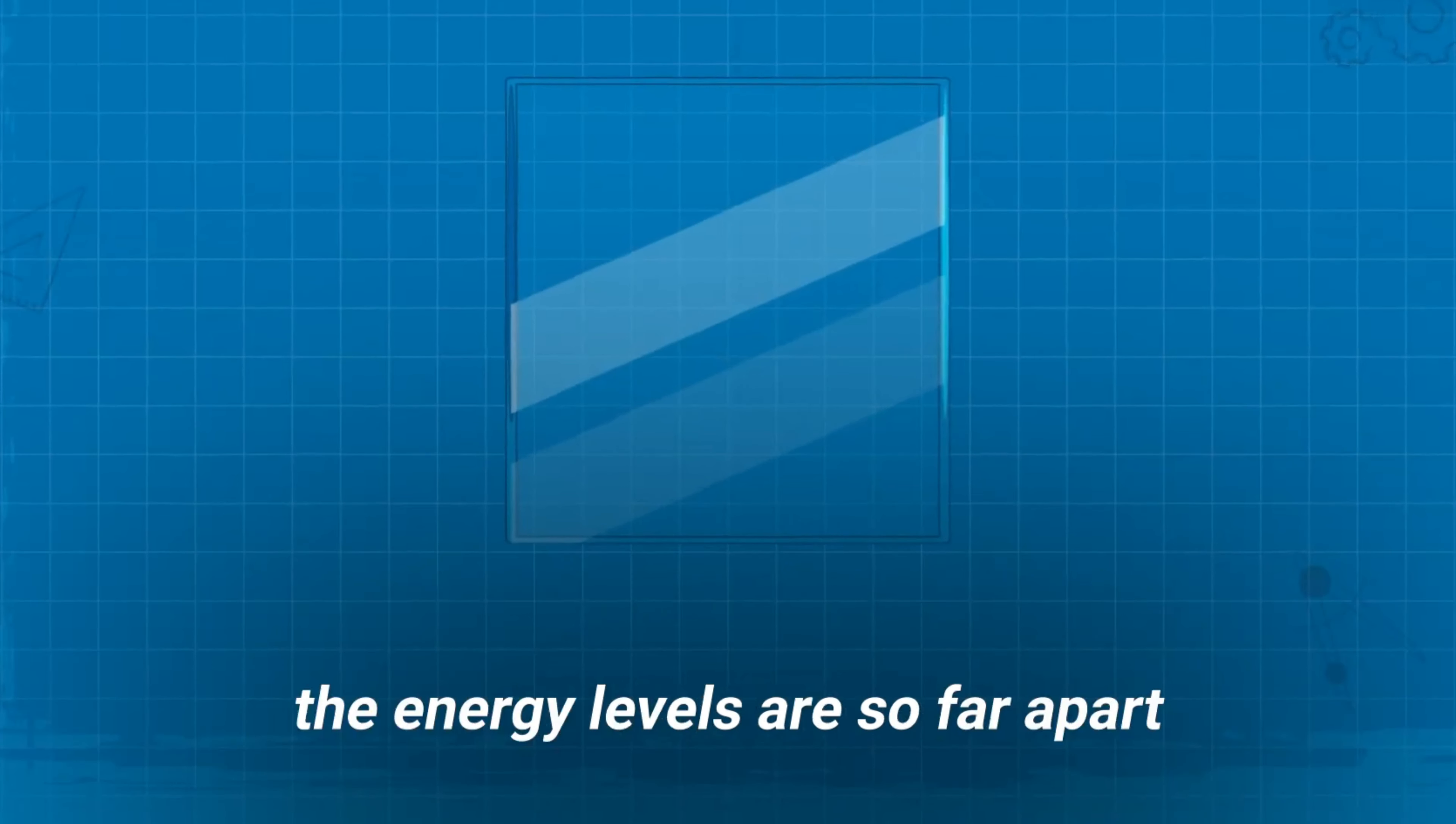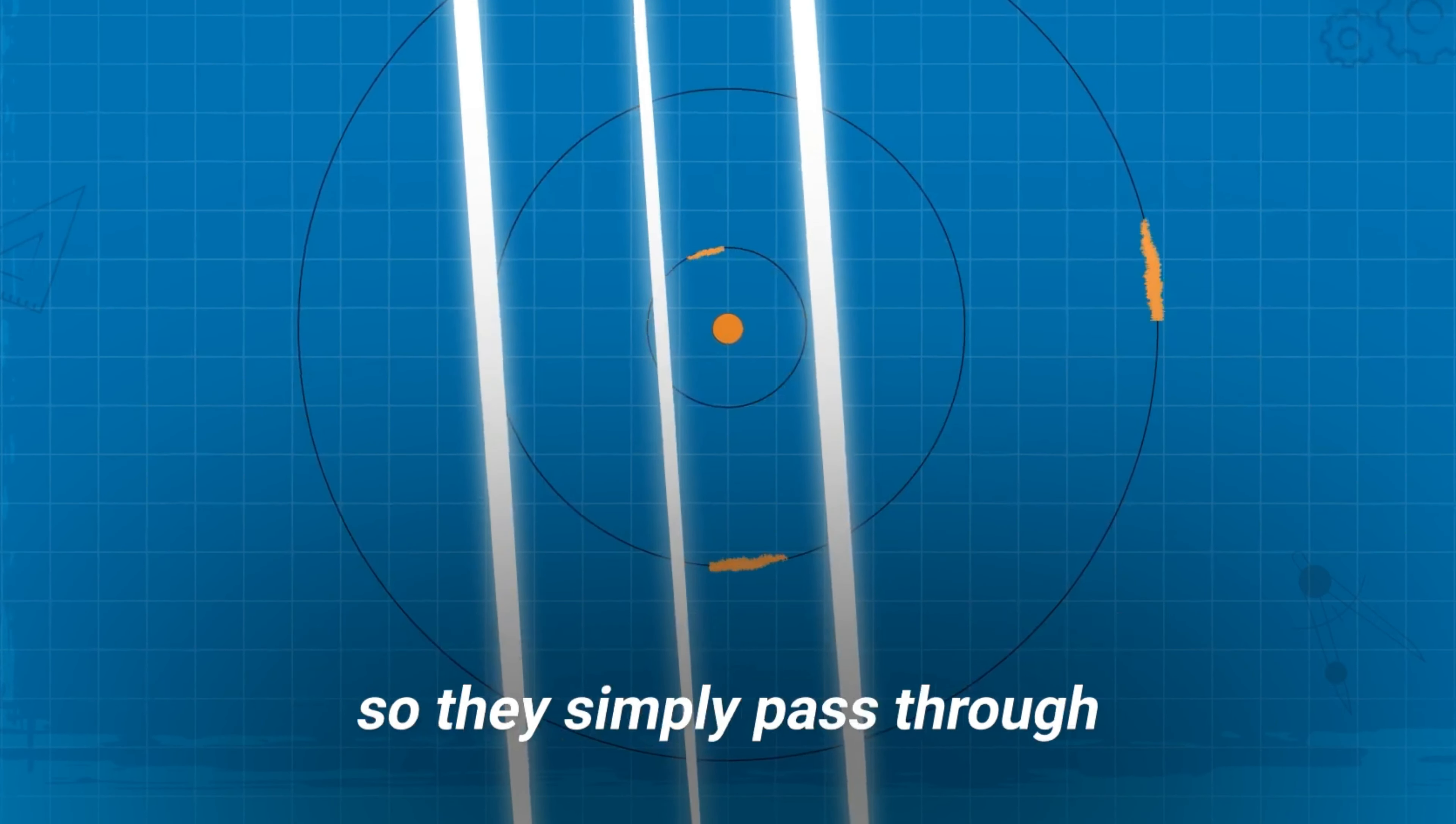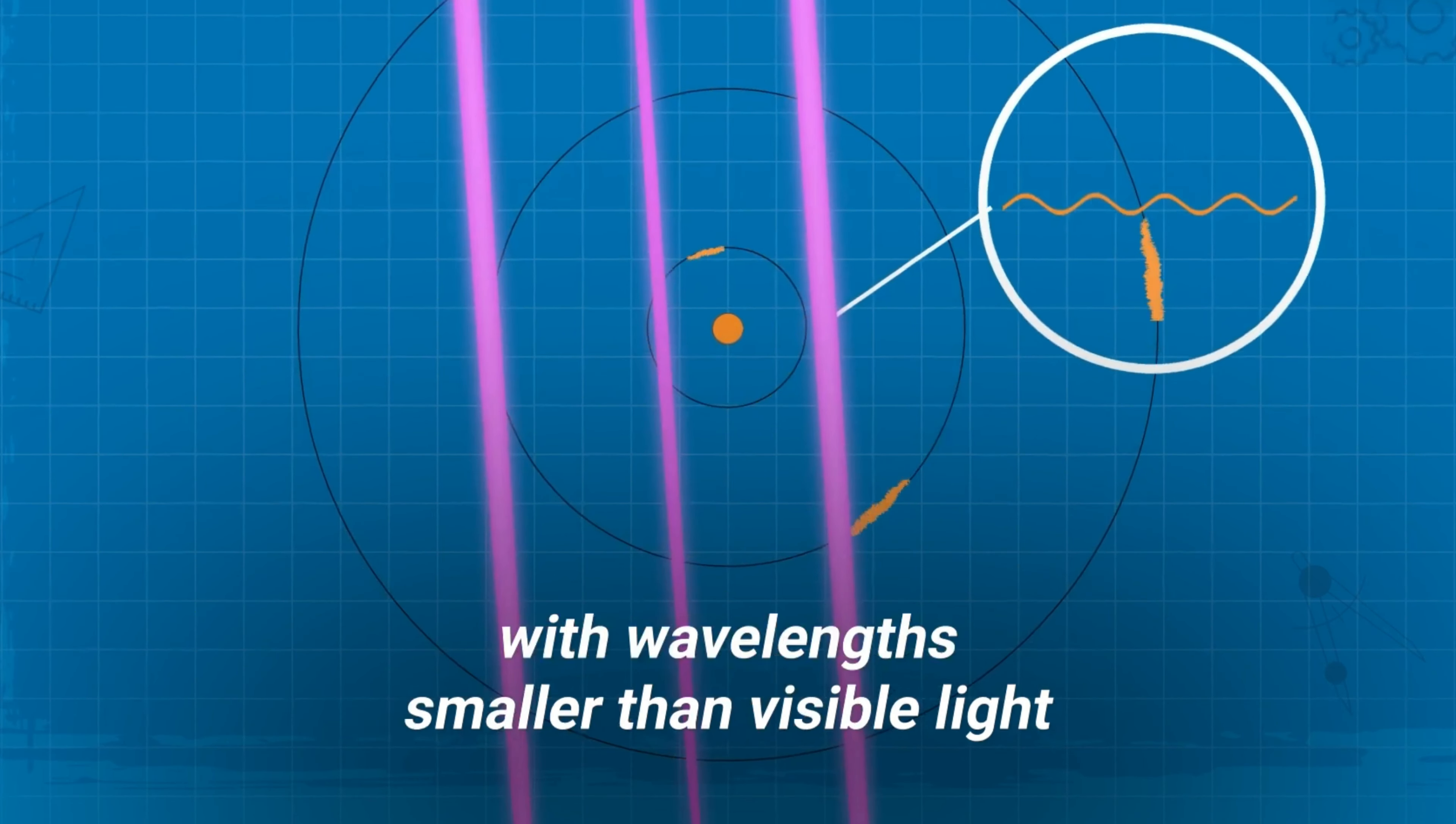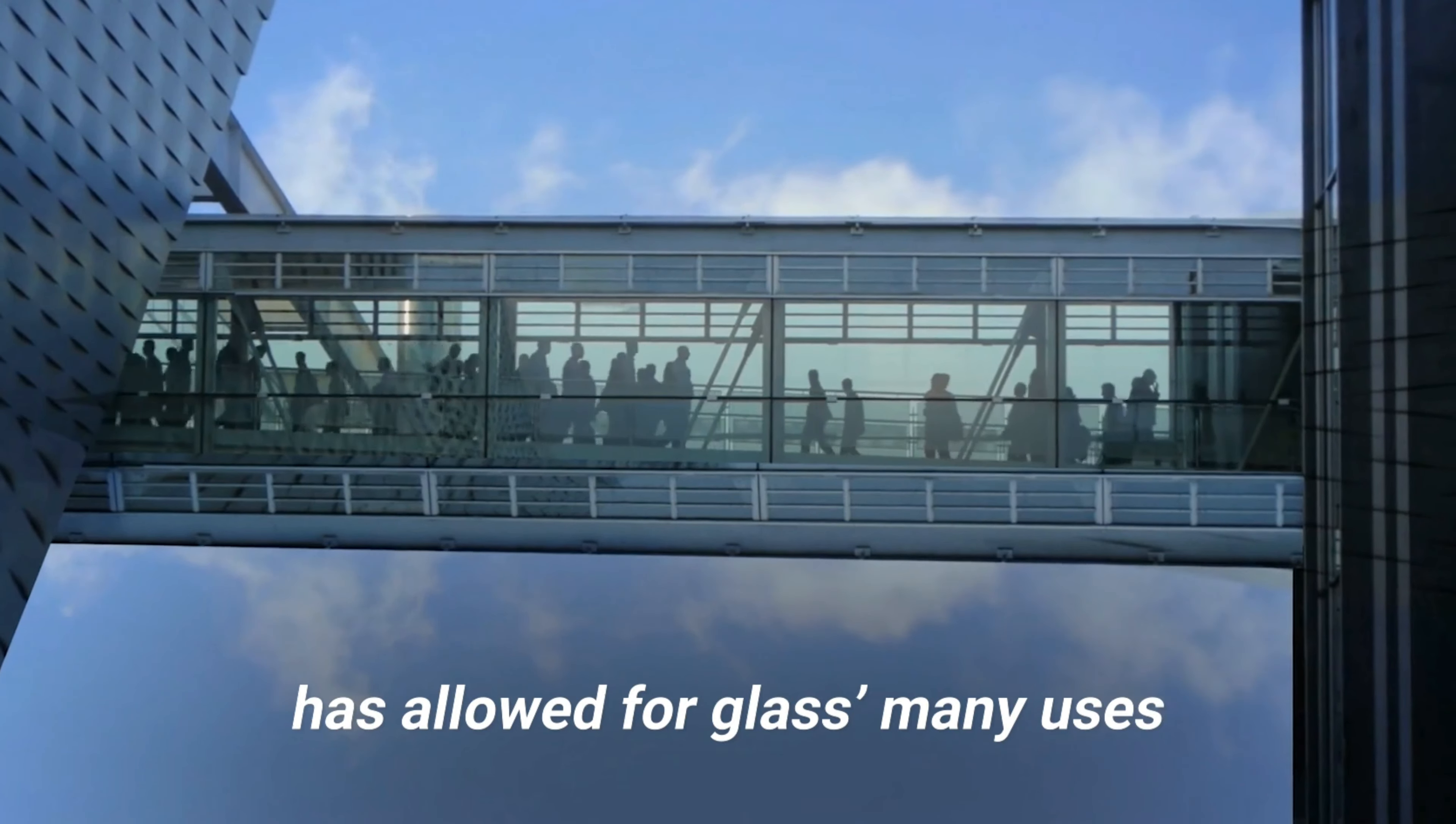In glass, the energy levels are so far apart that photons don't have enough energy to excite electrons, so they simply pass through. But photons of ultraviolet light, with wavelengths smaller than visible light, have enough energy to excite electrons from one level to another. This incredible property of being both solid and transparent has allowed for glass's many uses.